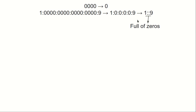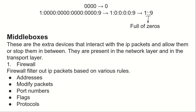Middle boxes are extra devices present between the host and the router. They interact with IP packets and either allow or stop them in transit. Middle boxes are present mostly in the network layer and also in the transport layer.